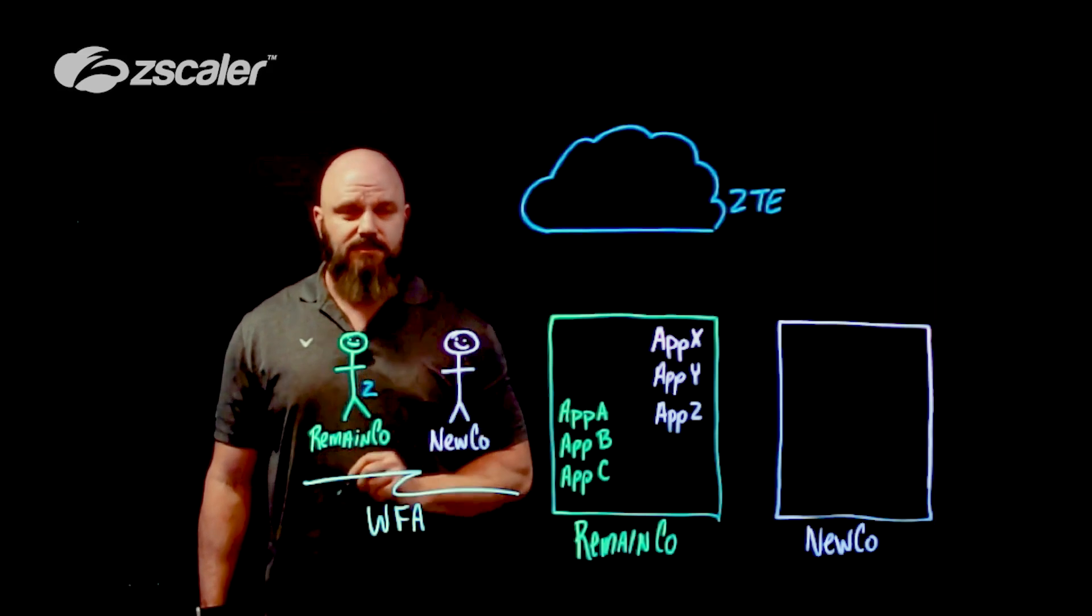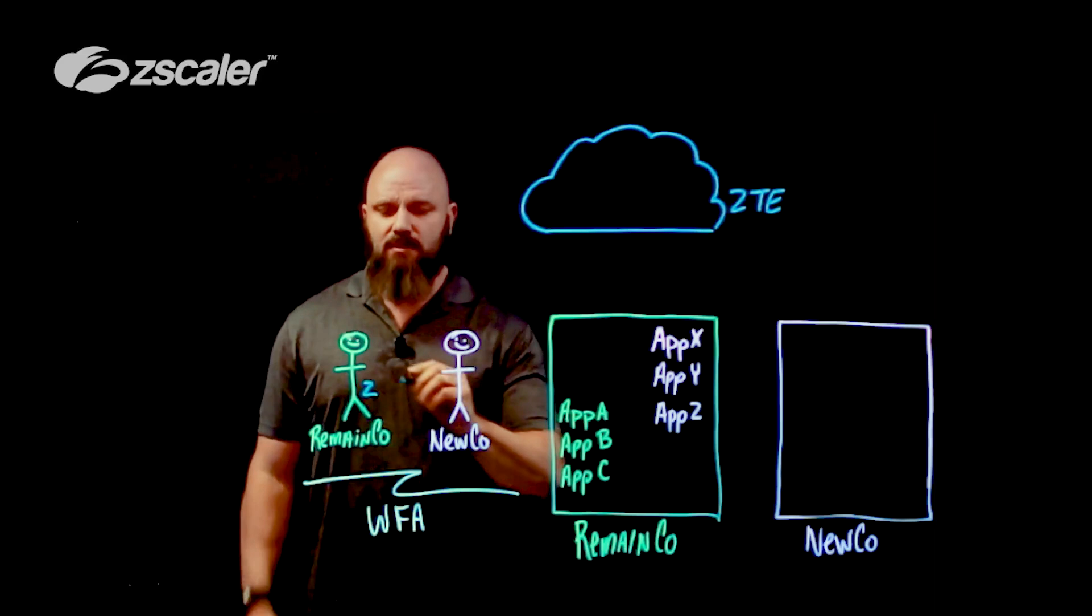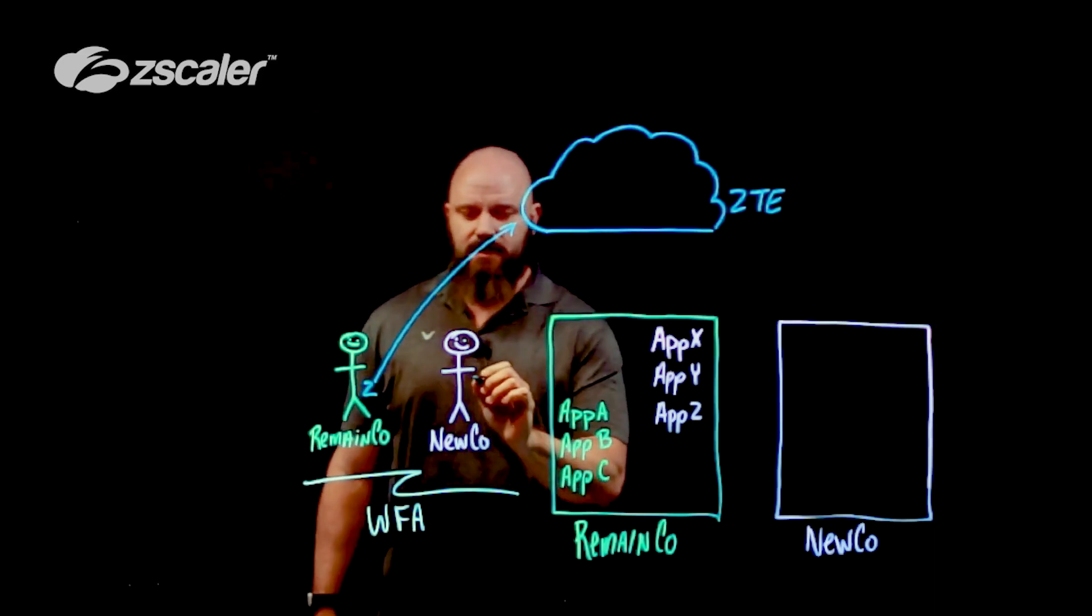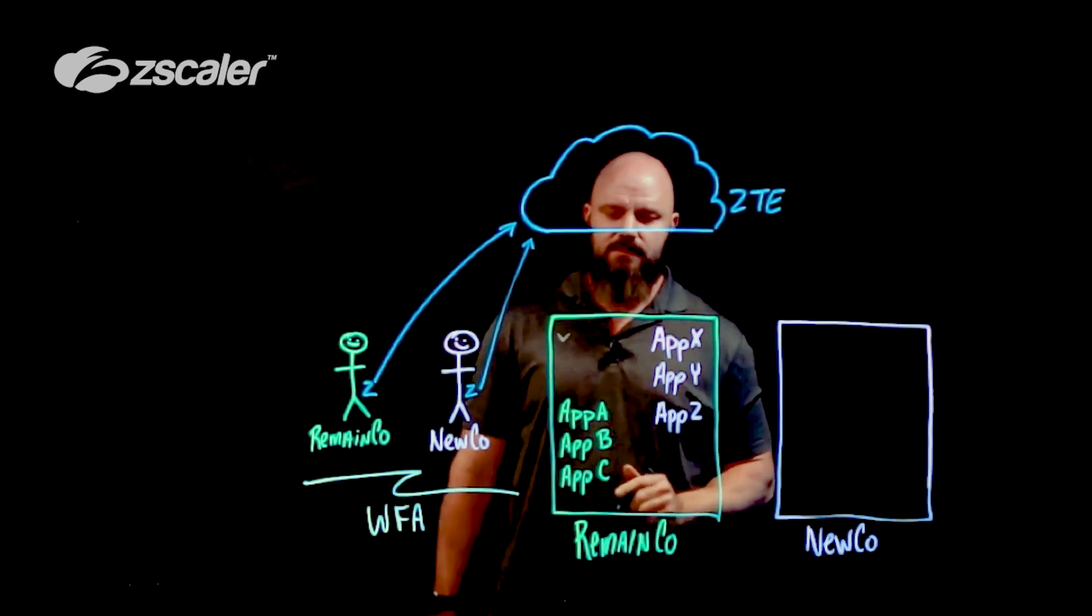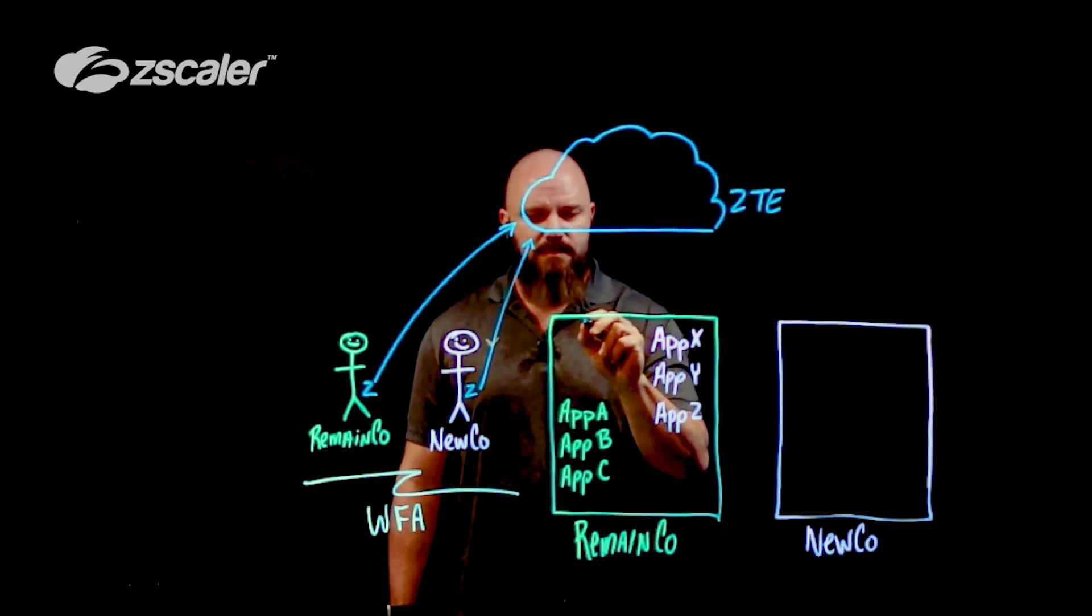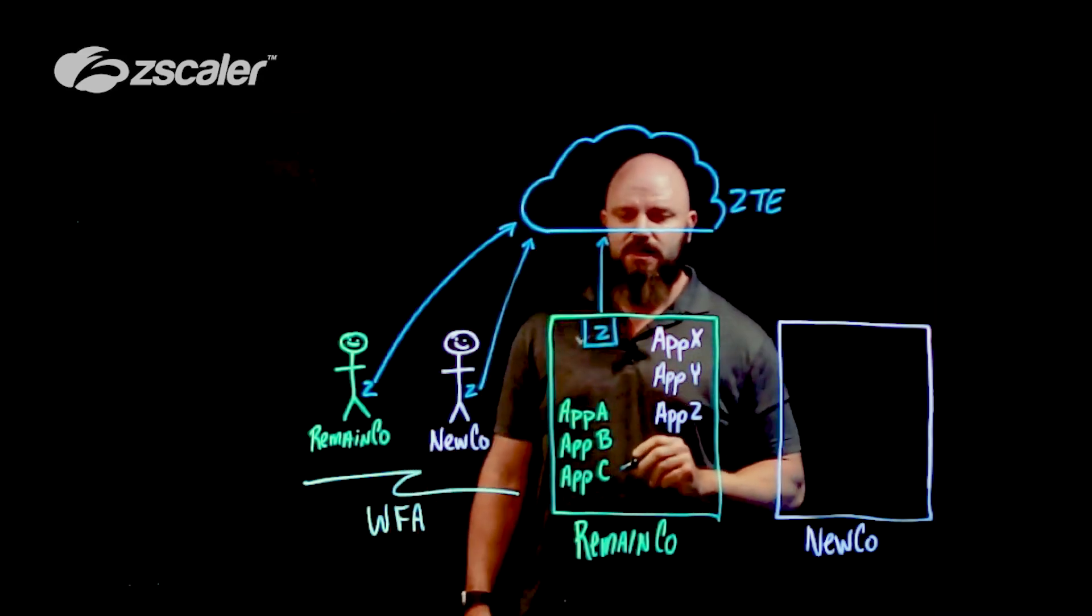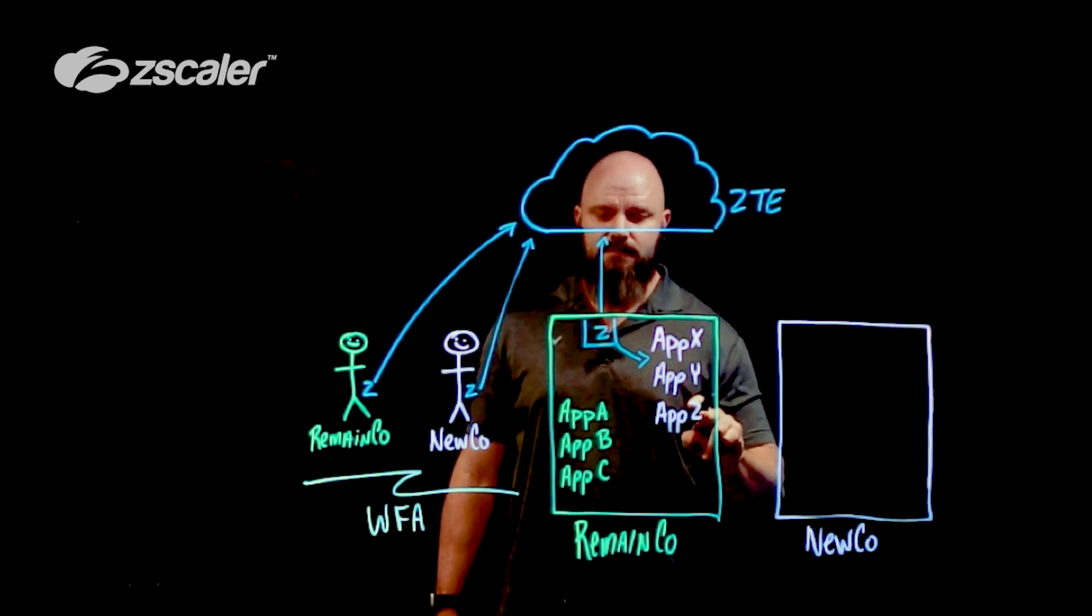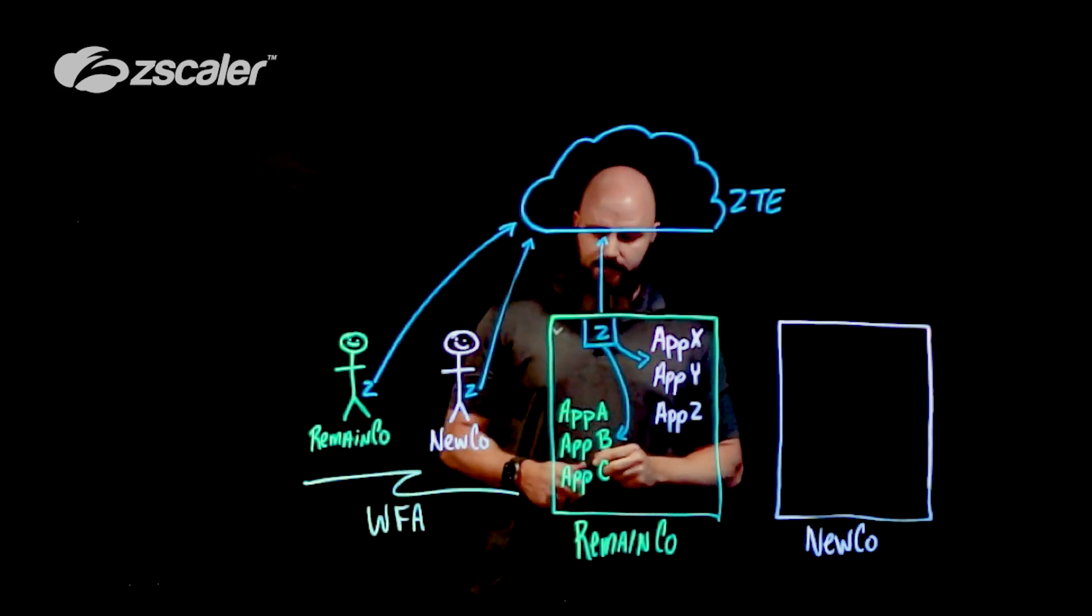As we've discussed in previous videos, we have Zscaler Client Connector. It's a lightweight agent. This gets distributed out to all of your endpoints. And reaches out over here. On NuCo, they're going to have the Zscaler Client Connector on this as well. Reaches outbound. Over here at the data center, we have the Zscaler Application Connector. And the sole goal in life of this thing is to reach outbound to the zero trust exchange. And on top of that, it has that application adjacency. It can talk to applications X, Y, and Z. And it can also talk to applications A, B, and C.